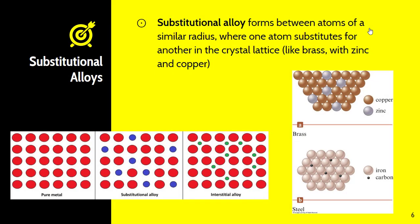And lastly, we have what's known as a substitutional alloy. Substitutional alloys form between atoms of a similar radius, where one atom substitutes for another in the crystal lattice. So for example, brass with zinc and copper. Zinc and copper on the periodic table have a very, very similar atomic radius. So the atoms are not going to be able to fit in between the atoms like we talked about in steel, but rather they're going to replace the copper atoms to form the alloy such as brass.